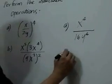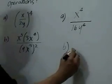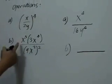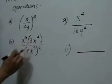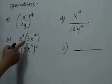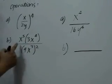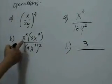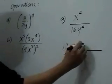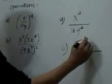For letter B, for the numerator, we have x to the 5th multiplied by 3x to the 4th. If we take care of the numerical coefficients first, we have 1 times 3, or 3. And x to the 5th times x to the 4th is x to the sum of 5 and 4, which is 9.